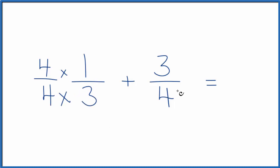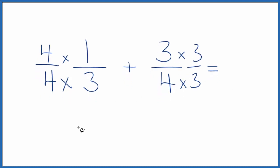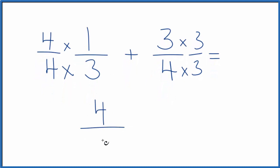Over here to get 12, I could multiply 4 times 3, and let's make sure we multiply the top as well. So 4 times 1, that's 4, over 4 times 3 is 12, plus 3 times 3, that's 9, and then 4 times 3, again, 12.